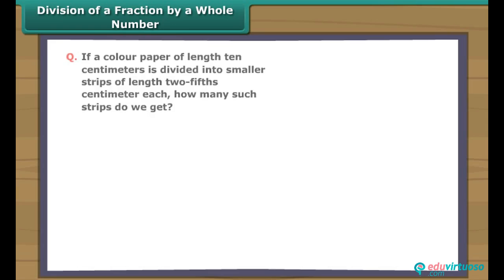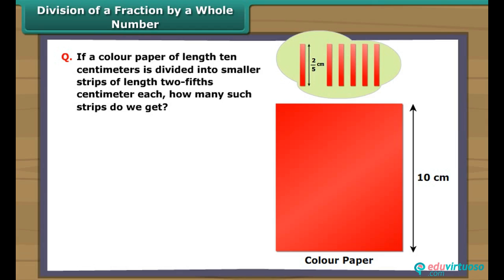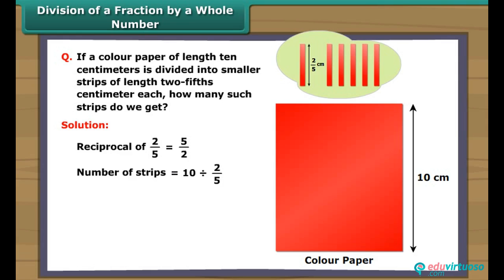Division of a whole number by a fraction — example: A color paper of length 10 centimeters is divided into smaller strips of length two-fifths centimeter each. How many strips do we get? The reciprocal of two-fifths is five-upon-two. So 10 divided by two-fifths equals 10 multiplied by five-upon-two, giving 50 upon 2, which simplifies to 25 strips.